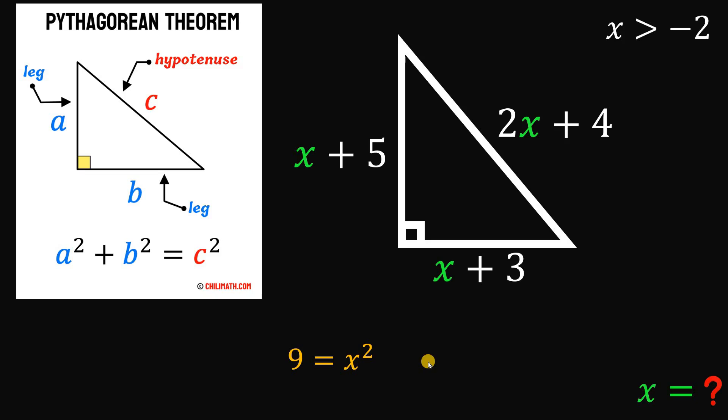So to solve for the value of x, let's get the square root on both sides. And since we have an even power of x, we have 2 possible values here. We have positive or negative. And there you go. Note, square root of 9 is 3. Square root of x squared is x. So we have positive or negative 3 equals x.